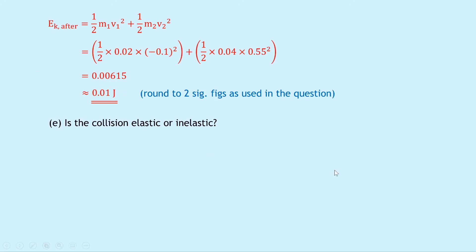Part E asks: is the collision elastic or inelastic? It's elastic, since kinetic energy is conserved — the kinetic energy before was 0.01 joules and after is roughly 0.01 joules, so kinetic energy has stayed roughly the same.